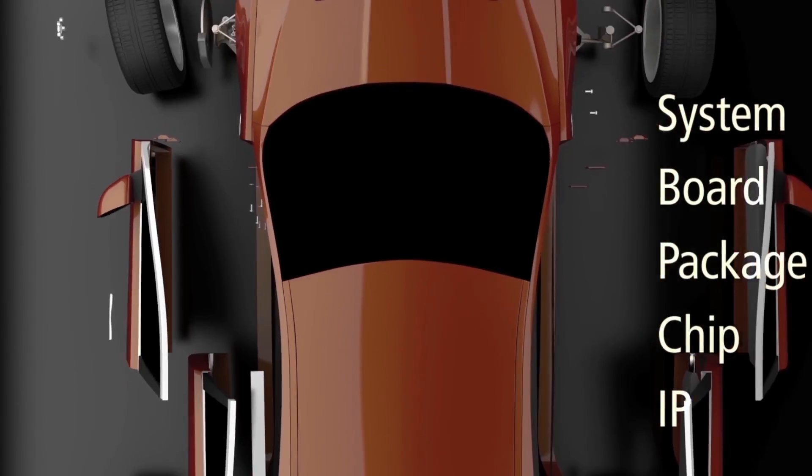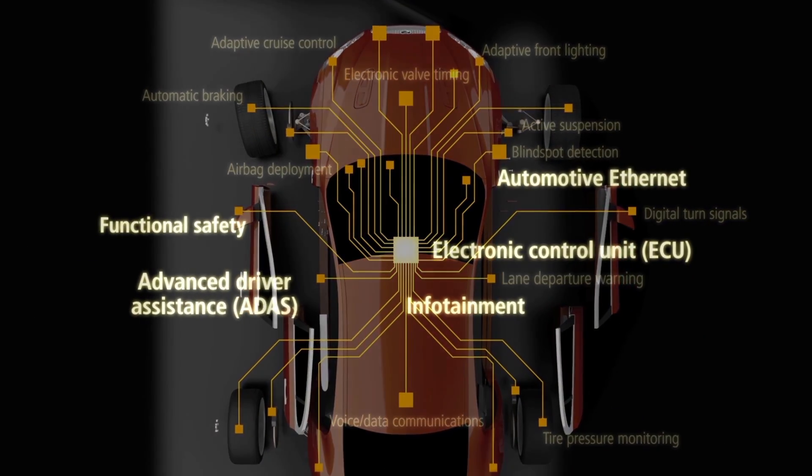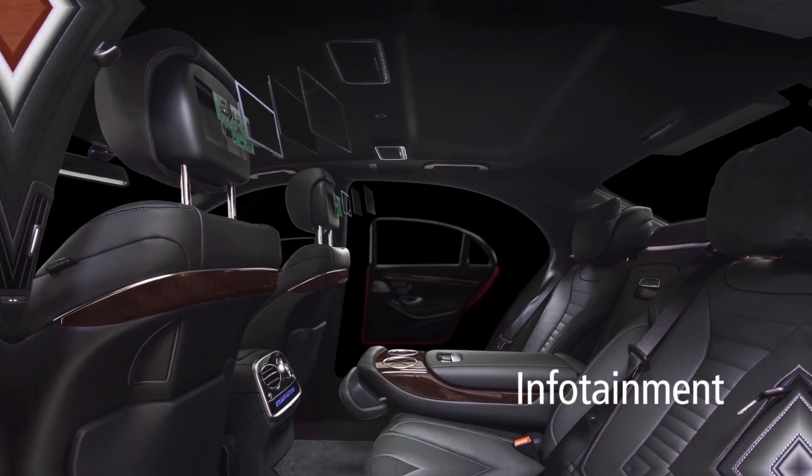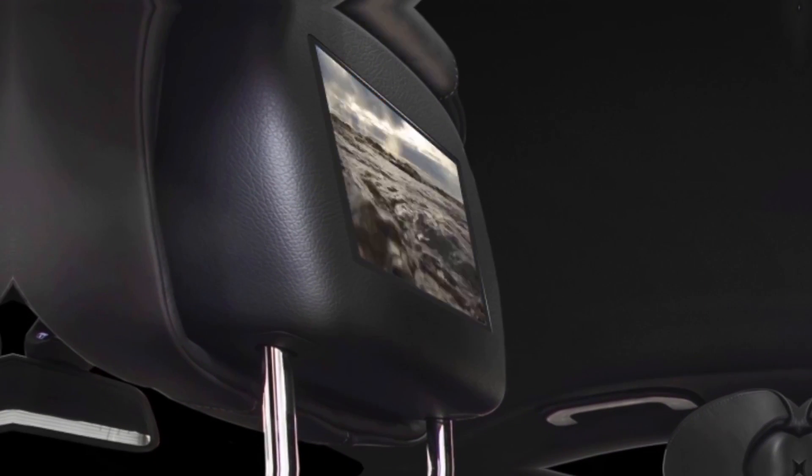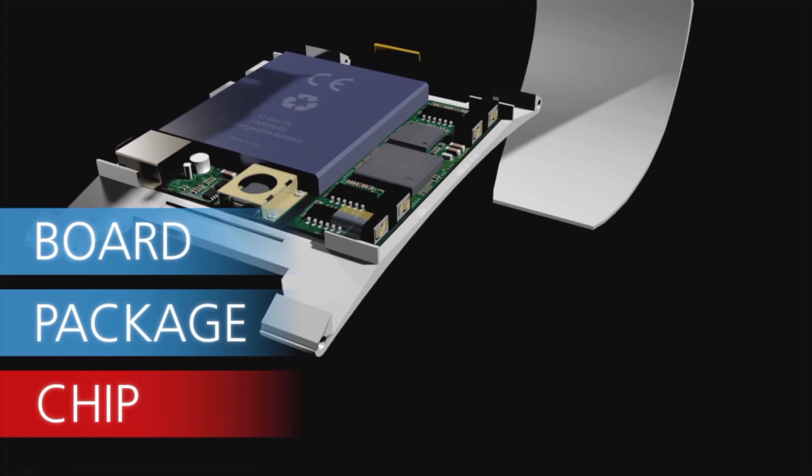Think about the last design project you worked on. To say it was complicated would be an understatement, right? Automotive, internet of things - the types of designs you're working on today, the types of designs that make the biggest impact, they make that impact because they're complicated.